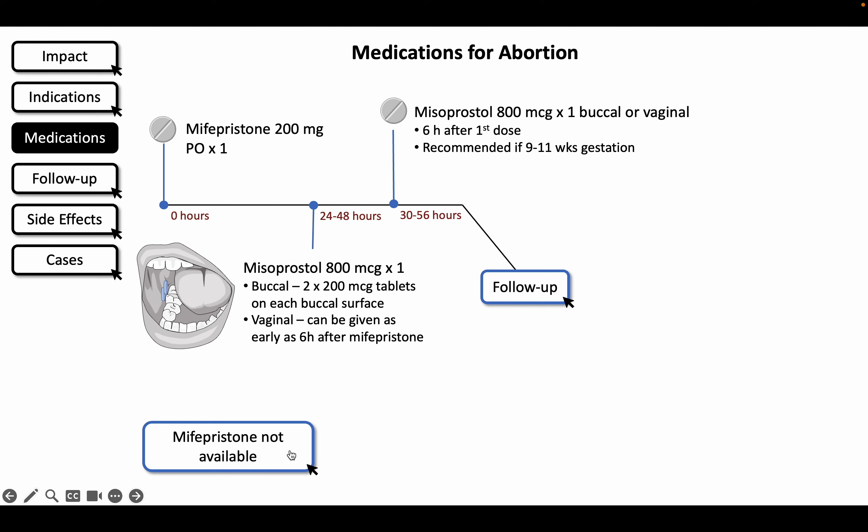24 to 48 hours later, they will take misoprostol 800 mg, which consists of 4 tablets. This can be taken buccally or vaginally. If their gestational age is 9 to 11 weeks, they should take a second dose of misoprostol 800 mg 6 hours after the first.